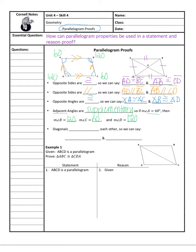I'd put a star by this last one: diagonals in a parallelogram bisect each other. Bisect means split in half. So if I use the picture to the right, AE would be congruent to CE, and BE is going to be congruent to DE. Adjacent angles isn't going to help you too much in actually solving a T-chart proof, but opposite sides congruent, opposite angles congruent, and diagonals bisect each other are probably your top three most likely to be used.